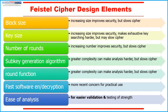The exact realization of Feistel's network depends on the following parameters and design features. Block size: increasing the block size improves security but slows the cipher. Key size: increasing the size improves security, making exhaustive key searching harder, but may slow the cipher. Number of rounds: increasing the number of rounds improves security but again slows the cipher. Sub-key generation algorithm: greater complexity makes analysis harder but slows the cipher. Round function: greater complexity makes analysis harder but again slows the cipher. Additional parameters include fast software encryption/decryption — a more recent concern for practical use — and ease of analysis for easier validation.